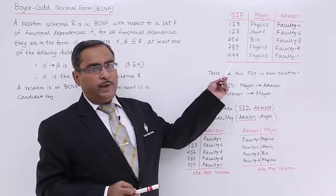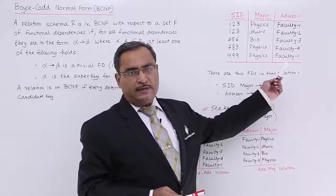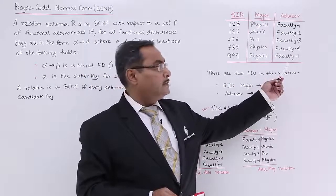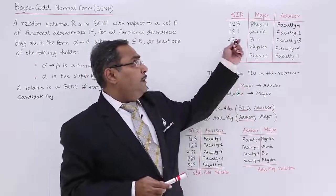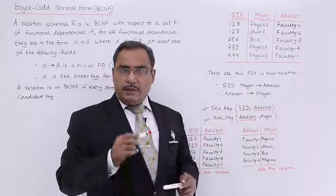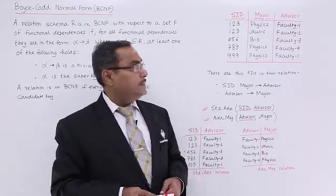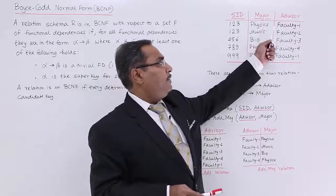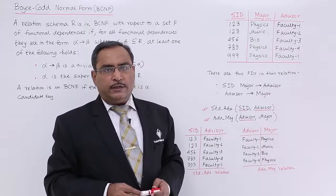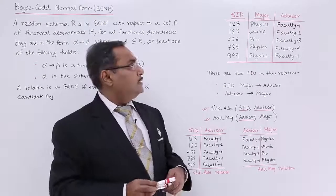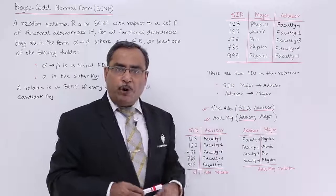This is one table having student ID, the respective subject that is major, and the respective advisor or faculty details — student ID, major, and advisor. This particular table has multiple tuples with some constraints. Issue number 1: a subject can have multiple advisors — look at physics, it has faculty 1 and also faculty 4. Issue number 2: for a single subject, there may be multiple students registered, as you can see for physics.